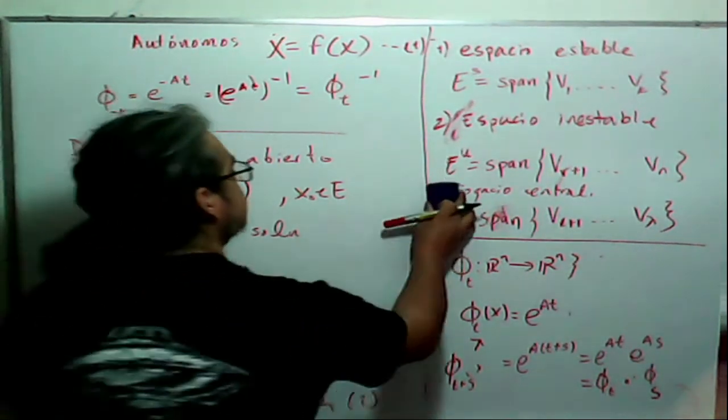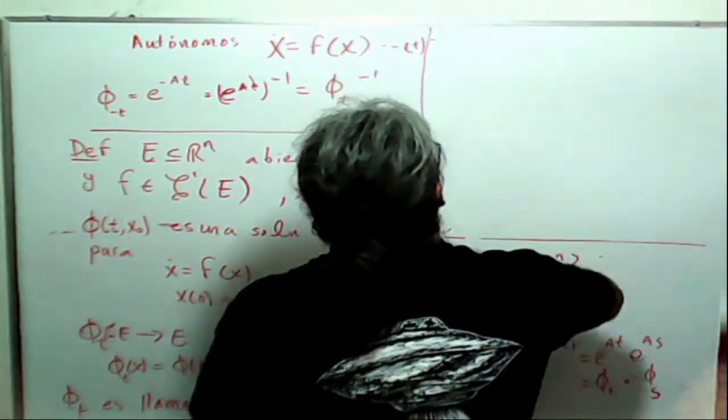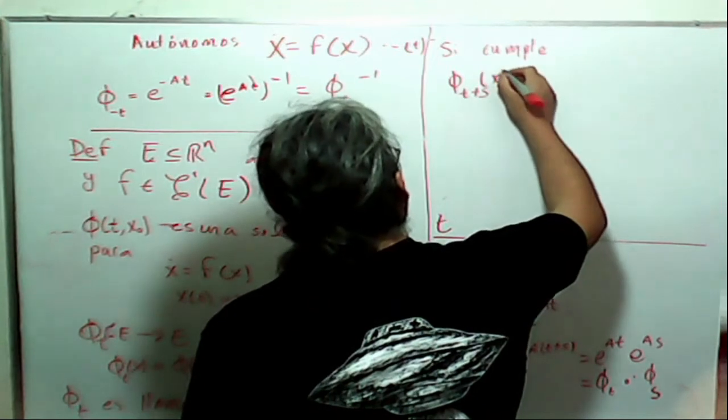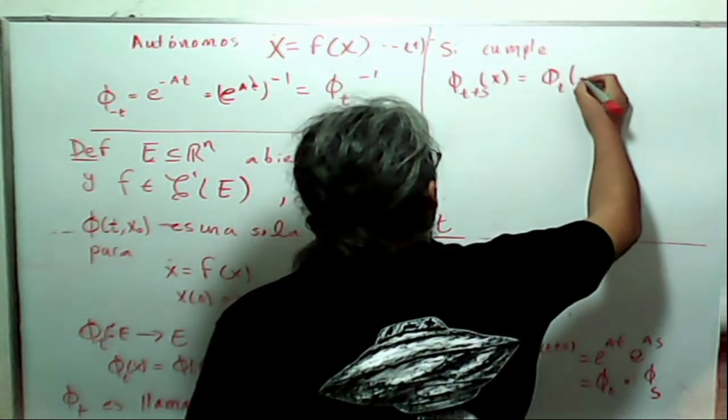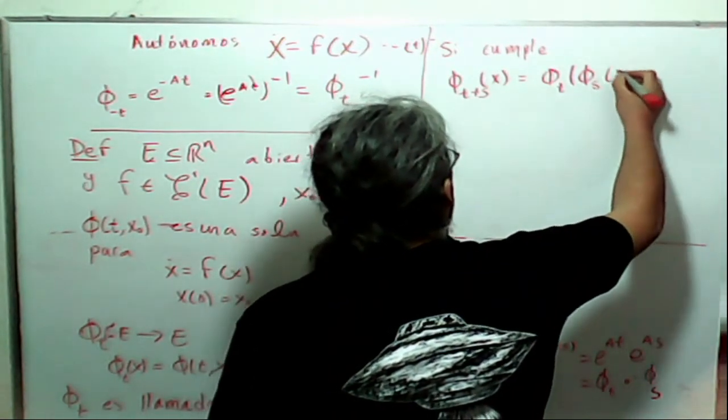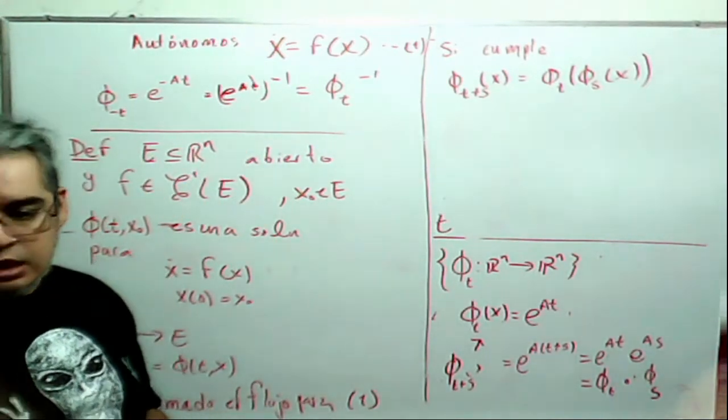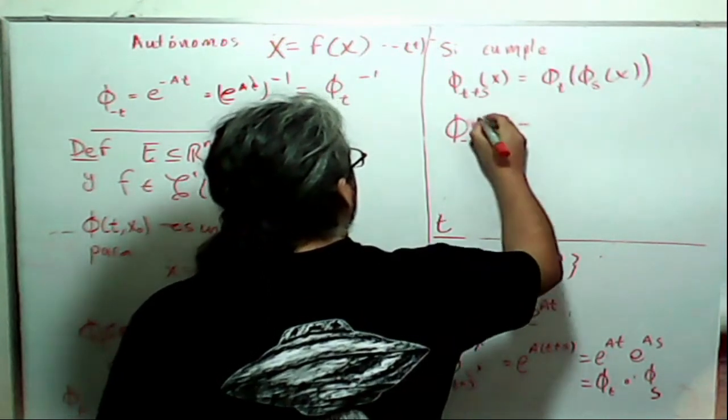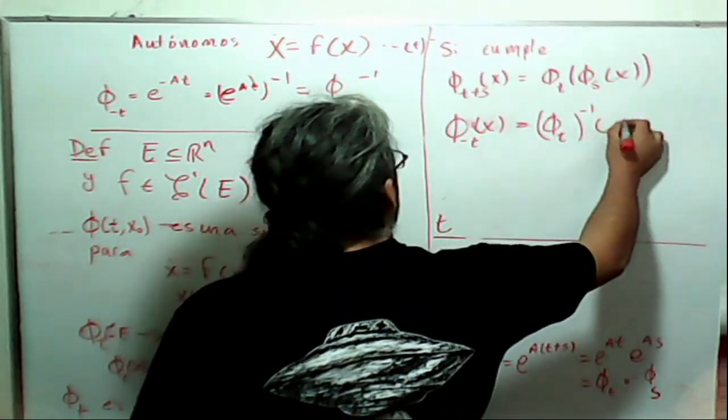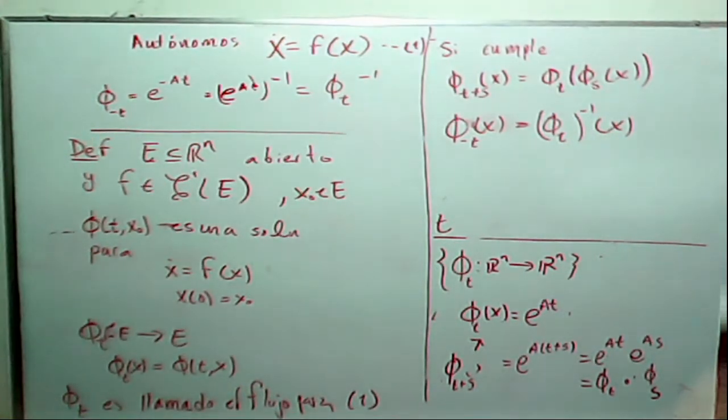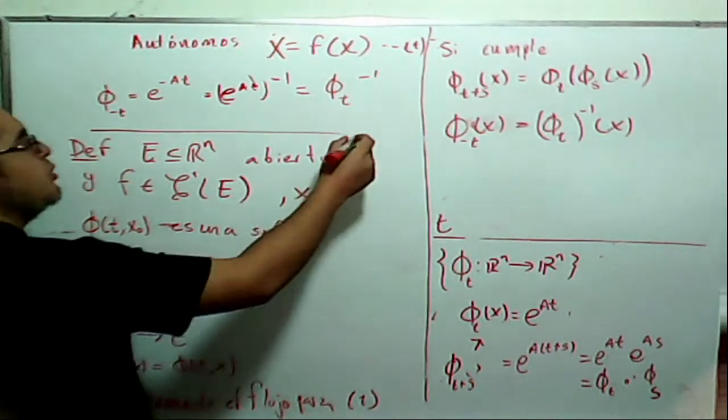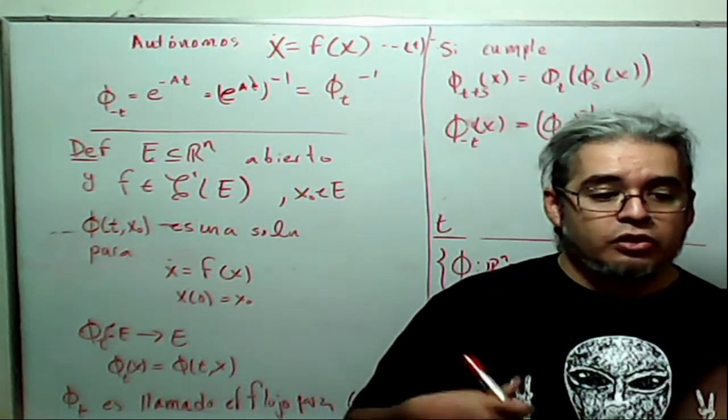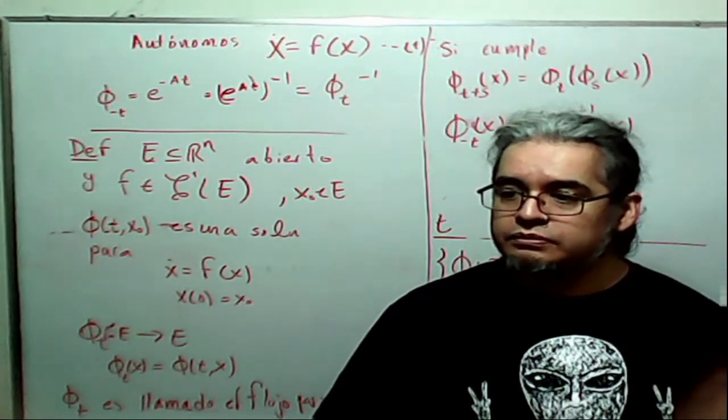Then it is a flow for that differential equation. And it fulfills, if it fulfills that φ of t plus s in x is φ of t applied to φ of s of x, and that φ of minus t of x is no more than φ_t inverse applied to the same x. Then, these two properties, in some books they call them the semigroup properties, but in reality, it is the property of being a group action over the set of solutions.